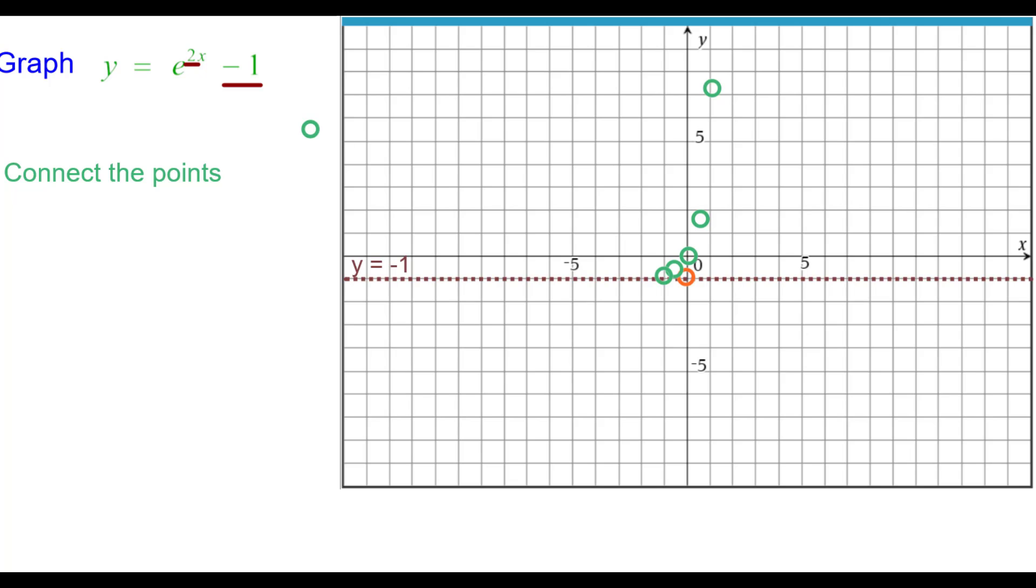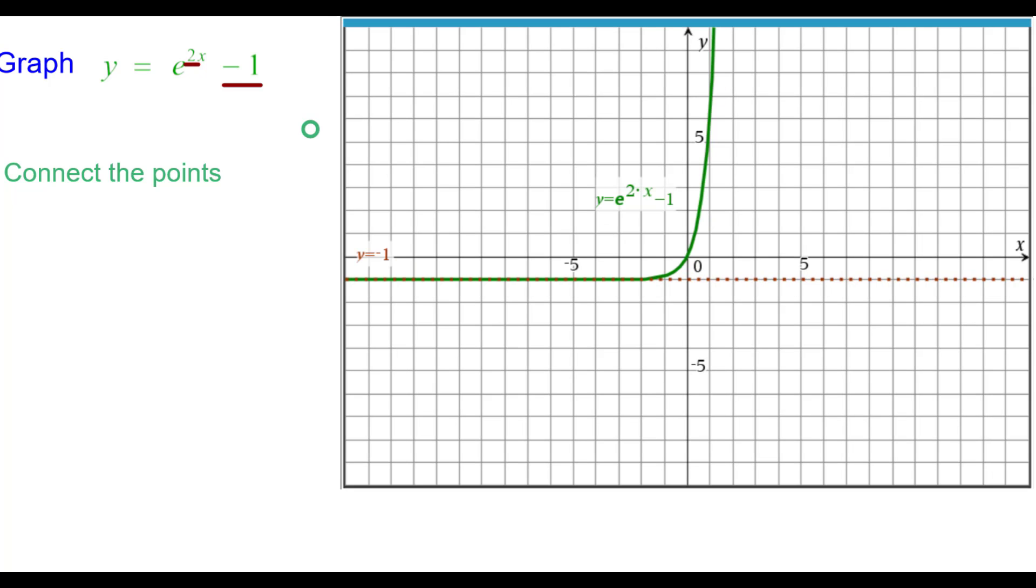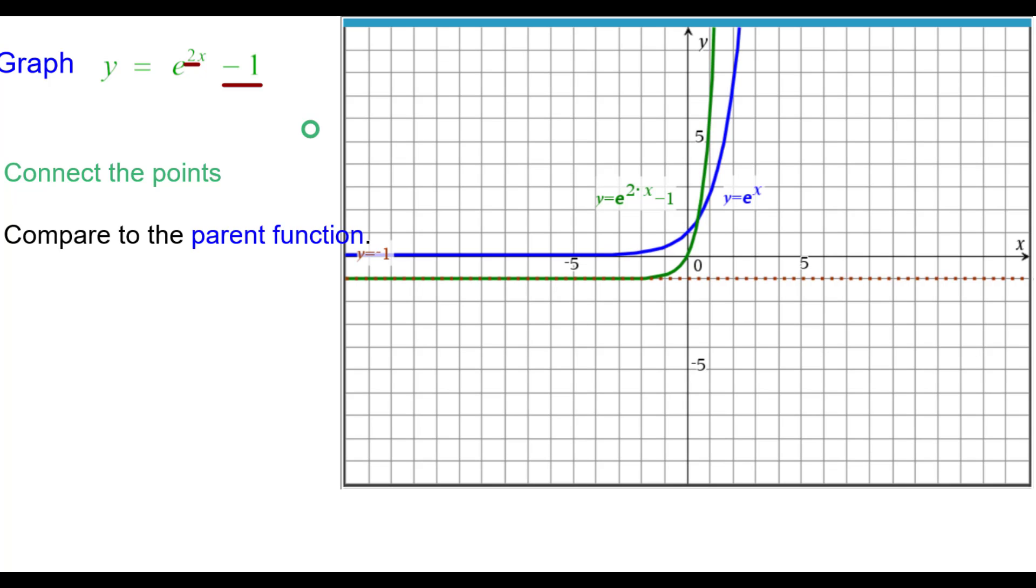We're ready to connect the points into an easy chair look and compare it to the parent function. And you can see that it's been shifted down and it's a little bit narrower.